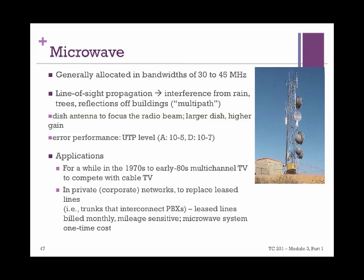The error performance of microwaves is generally at the unshielded twisted pair level. Rain and fog have negative effects, as well as reflective surfaces such as glass-covered buildings or lakes. Despite these factors, microwaves have a variety of telecommunication uses including broadcast communications, mobile phone transmissions, and private networks to replace leased lines.